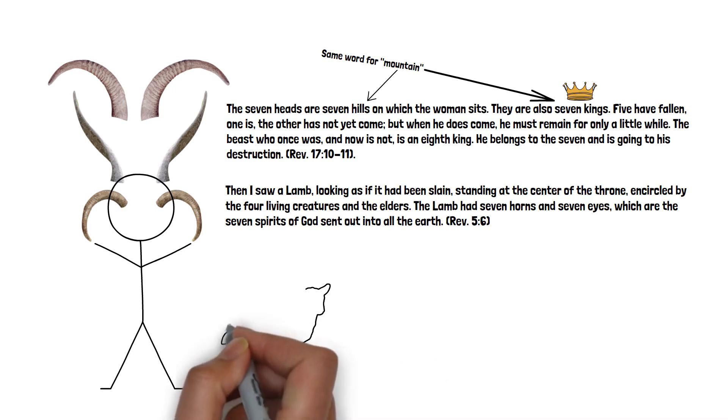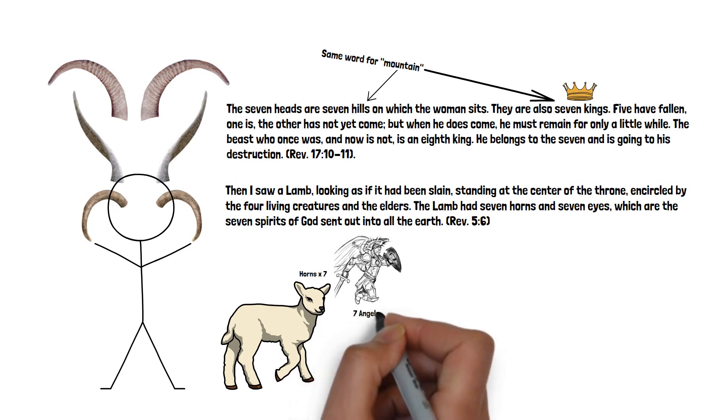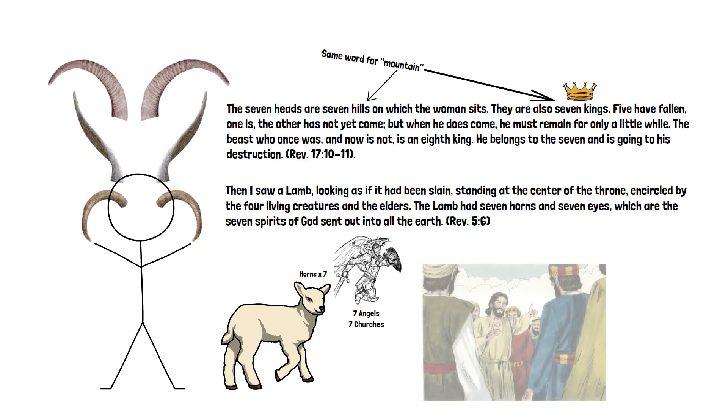The head of the lamb is obviously Jesus. I don't think anyone would argue with that. And upon his head sits seven horns, which are the seven spirits of God sent out into all the earth. This, as the context of this passage refers to, are the seven angels of the seven churches.